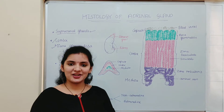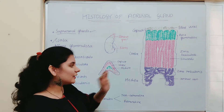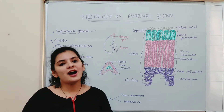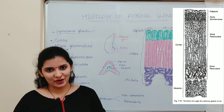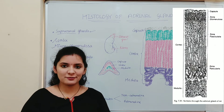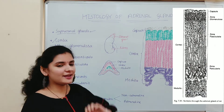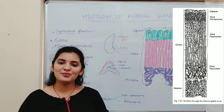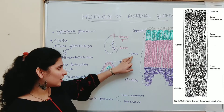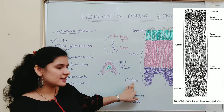So these are the three layers of the cortex: zona glomerulosa, zona fasciculata, and zona reticularis. Together, the cortex region secretes hormones called corticosteroids, which perform different functions. This division is purely based on the arrangement of cells.